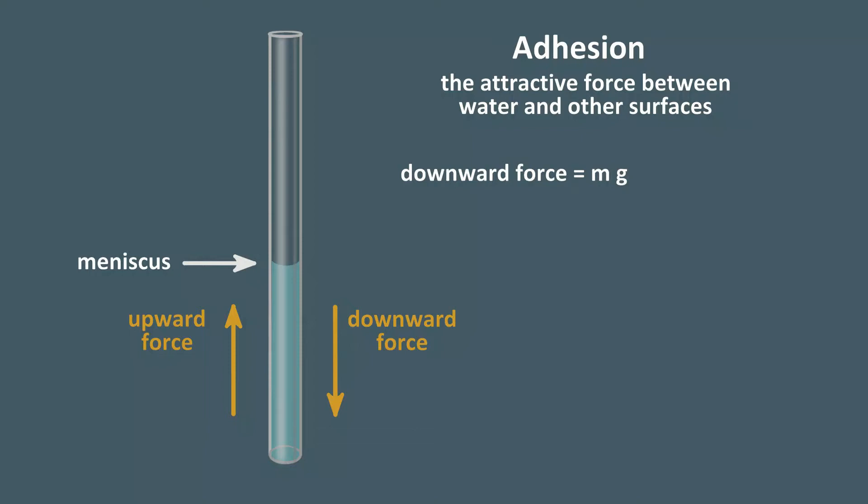The downward force equals the mass of the water column times the gravitational constant. The mass of the water will be the volume times the density given by the Greek letter rho. The volume of a column is pi r squared times the height, h. So, the overall downward force will be pi r squared times h times rho times g.